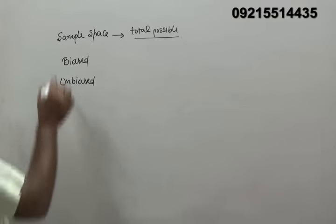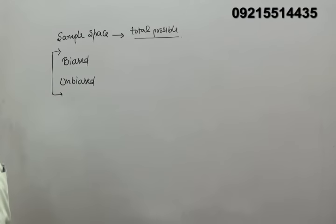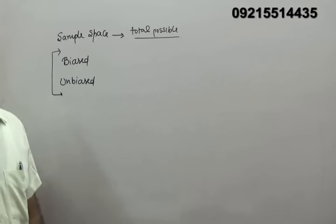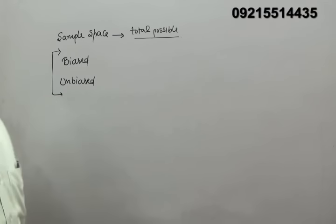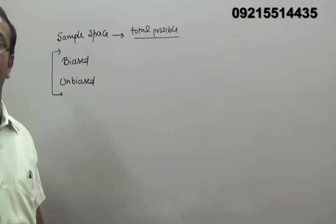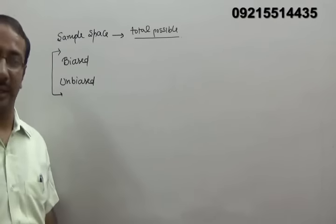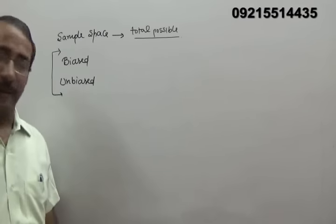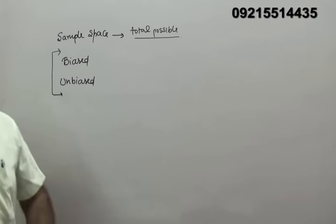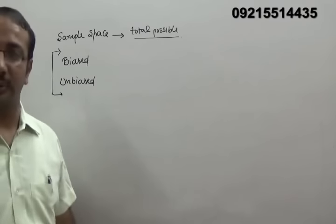Suppose a coin is tossed. If it is unbiased, there are two cases — head or tail — each with probability 1/2. If it is biased, the question will specify a different probability, for example that the probability of getting head is 1/3. In that case we say the coin is biased because the probabilities are not equal.